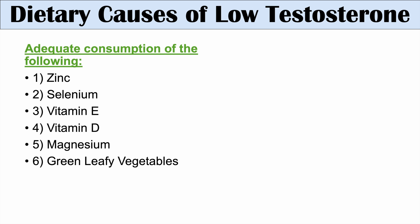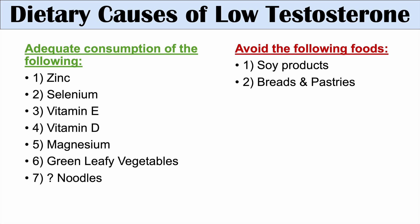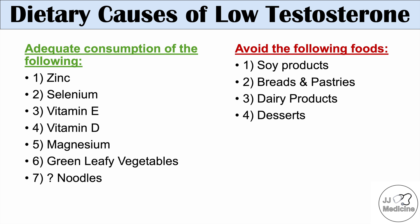It's also important to have adequate consumption of green leafy vegetables and possibly noodles. Foods to avoid include soy products, which are associated with low testosterone and hypogonadism; breads and pastries; dairy products; and desserts. Interestingly, eating out more often is associated with low testosterone, while eating at home is a better predictor of normal or elevated testosterone levels.